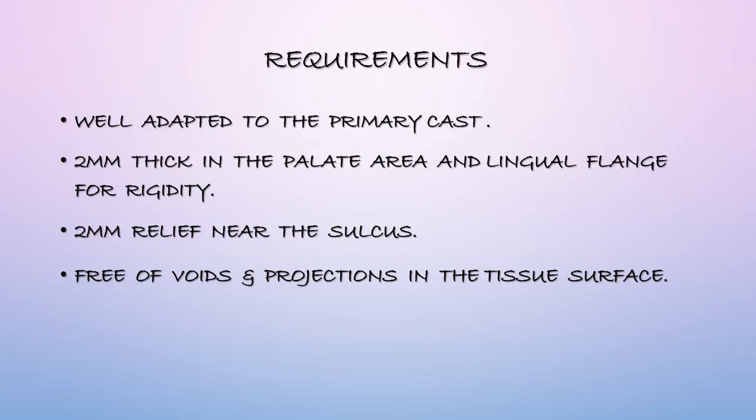The requirements of a custom tray include being well adapted to the primary cast, 2 mm thick in the palate and lingual flange area, and rigid. There should be at least 2 mm relief over the entire sulcus area. The custom tray should be free of voids with no projections or extra acrylic material, as these could injure the fragile soft tissue of a completely edentulous patient.